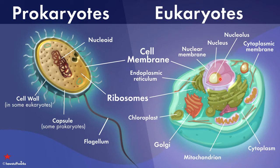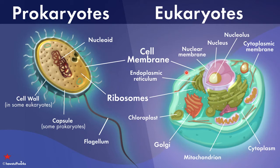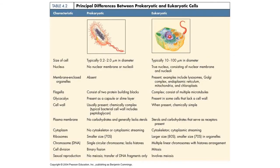Inside the nucleus there is a nucleolus. Cell wall is present in prokaryotes, while in eukaryotes a cell membrane is present, and in some cases a cell wall may also be found. Prokaryotes also have a capsule, flagella, and ribosomes — it is a simple structure. Eukaryotic cells are complex, with organelles such as endoplasmic reticulum, chloroplast, Golgi apparatus, mitochondria, cytoplasm, and cytoplasmic membrane.